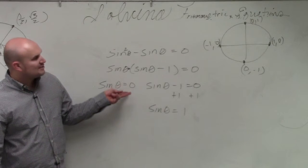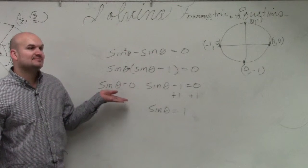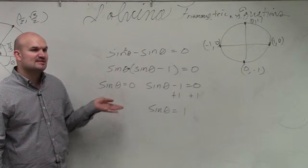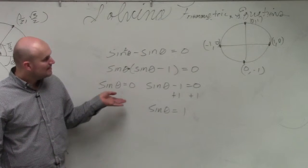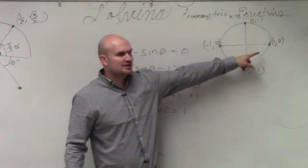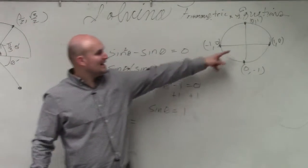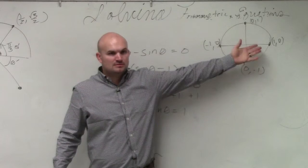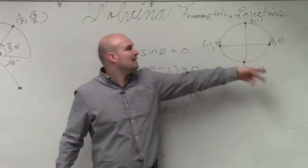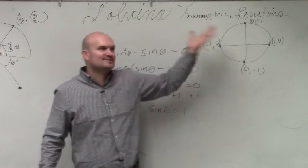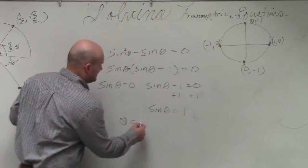So when we have sine is equal to 0. Remember, sine represents the what coordinate? Y. Y coordinate. So what angle is when sine is equal to 0? When does sine equal 0? What angle is this? 0 or 2π, but 2π is not, well, it's not included. So we're just going to do theta equals 0.